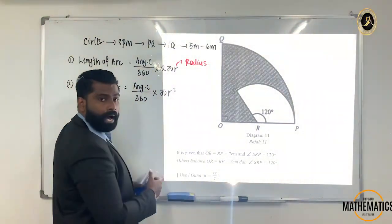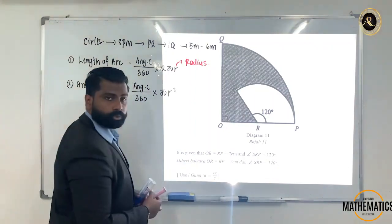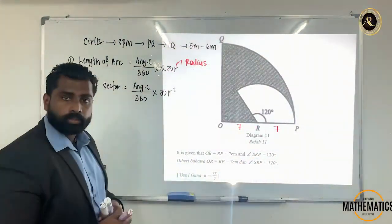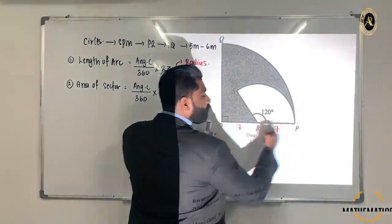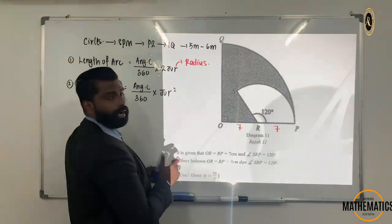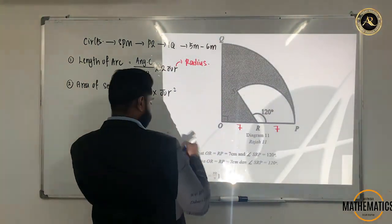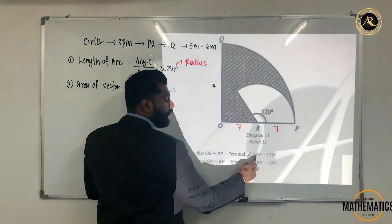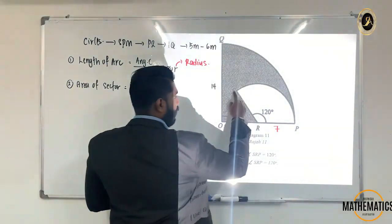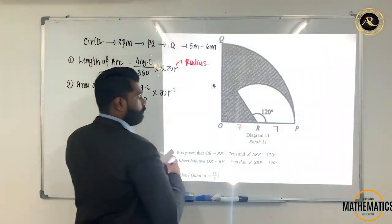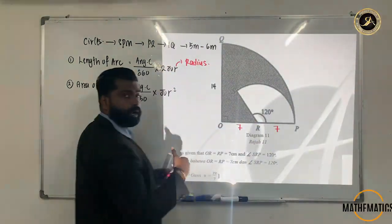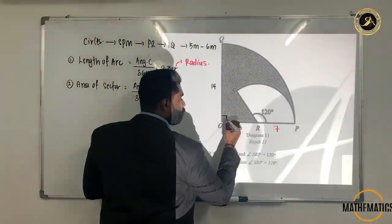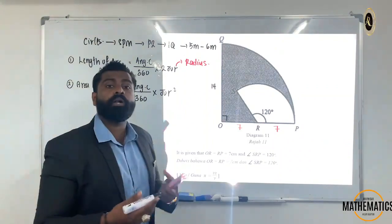It is given that OR equals 7 and RP equals 7, so O to R is 7 and R to P is also 7, making the total 14. The same applies on the other side — 14. The question tells you angle SRP is 120 degrees. The big shape looks like a sector, but we call it a quadrant. The sector is the smaller one. A quadrant means one quarter (1/4) of a circle.